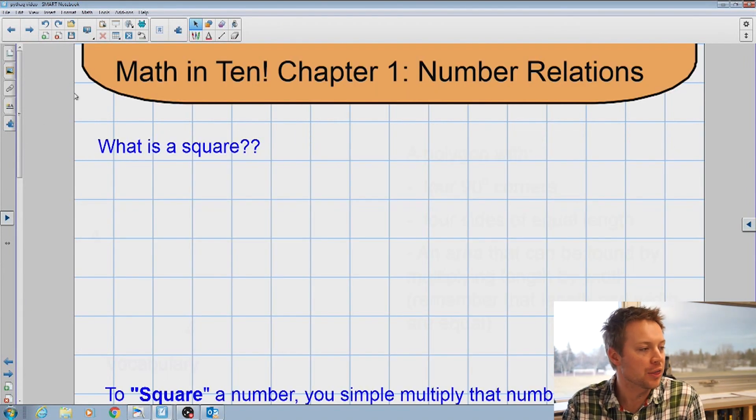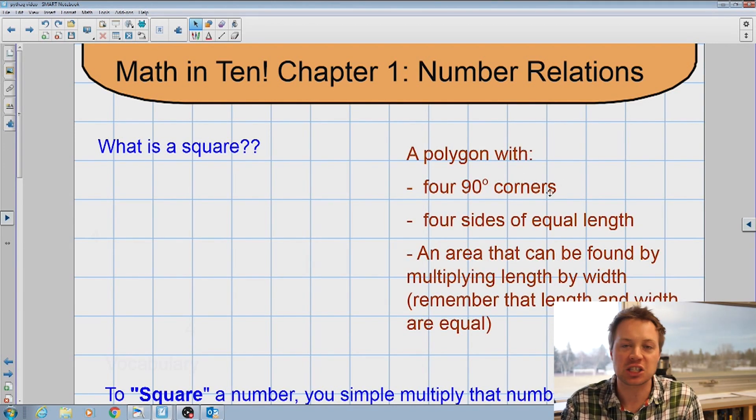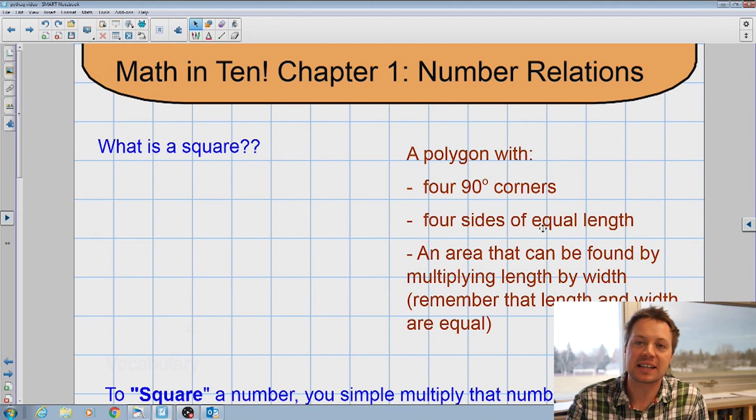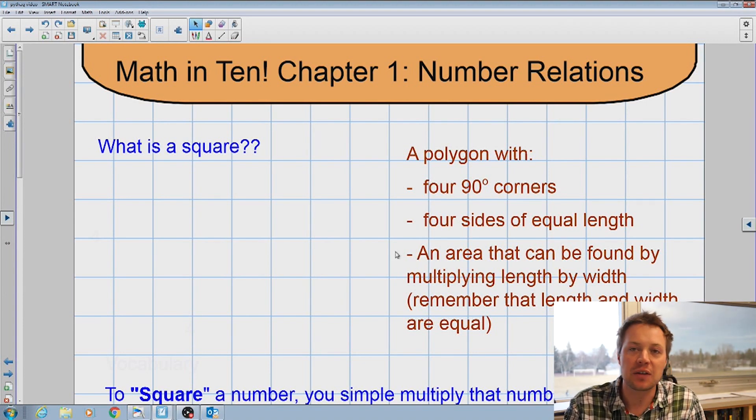Let's start with what a square is. Really simply stated, a square is just a polygon. It has to have four 90-degree corners, four sides that are all equal length. And if you want to take the area of that square, you can find that by multiplying length by width. But obviously, because it's a square, length and width are the same.